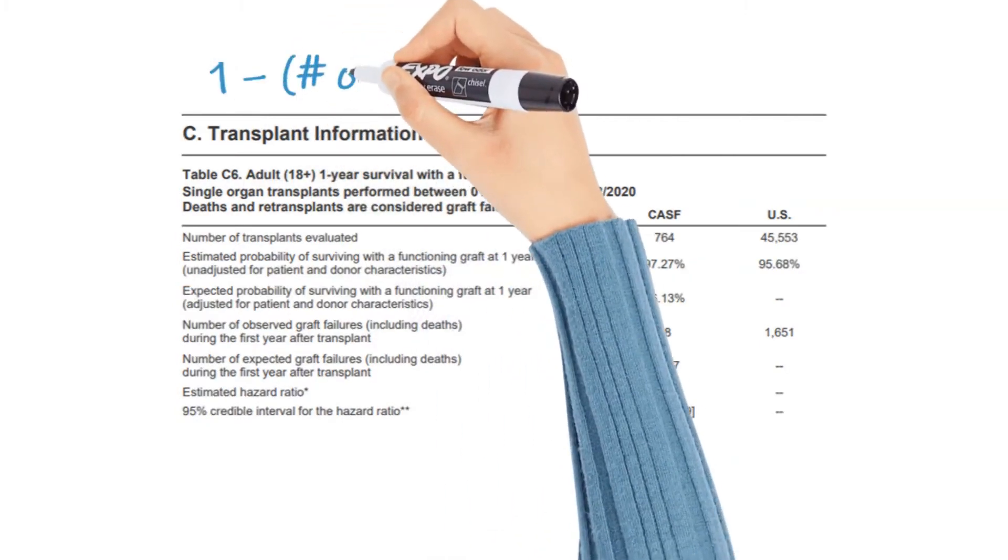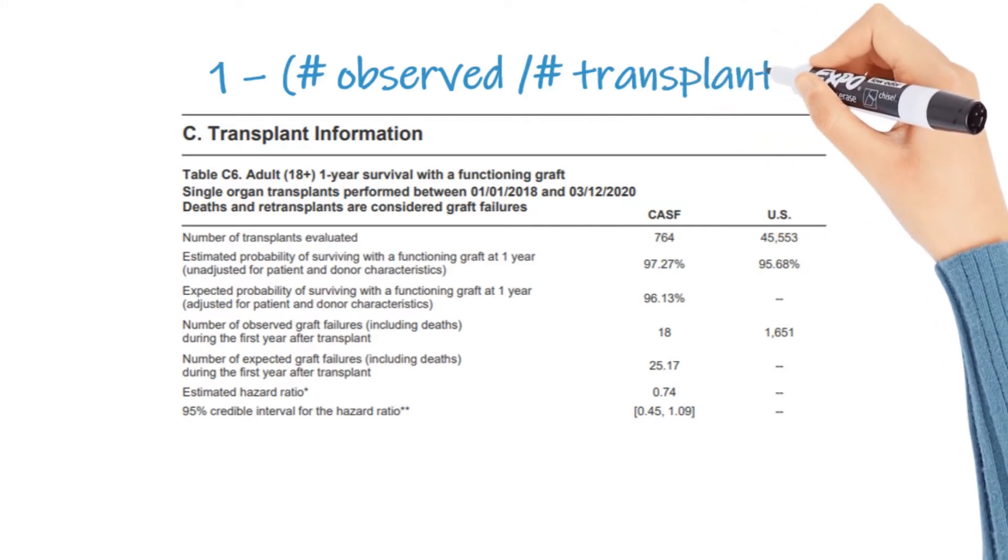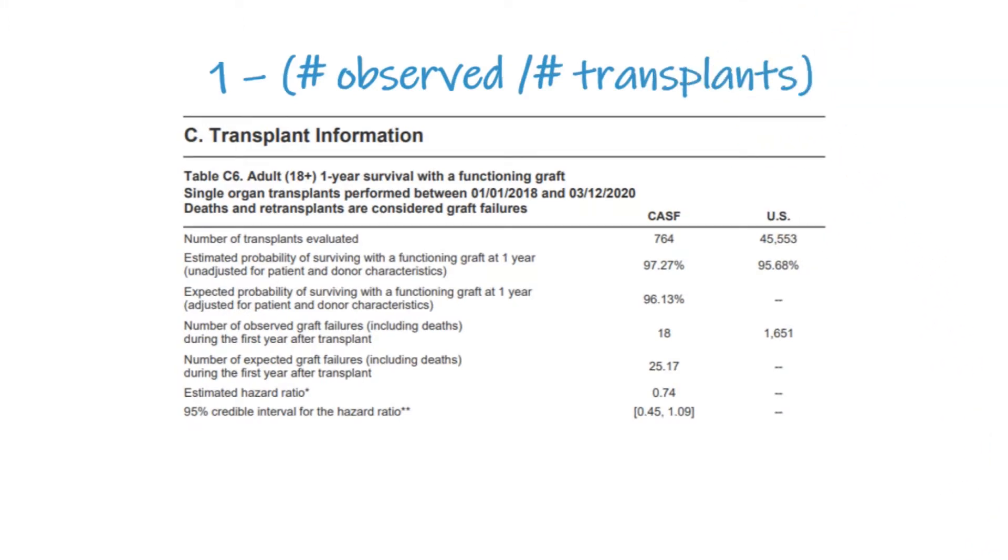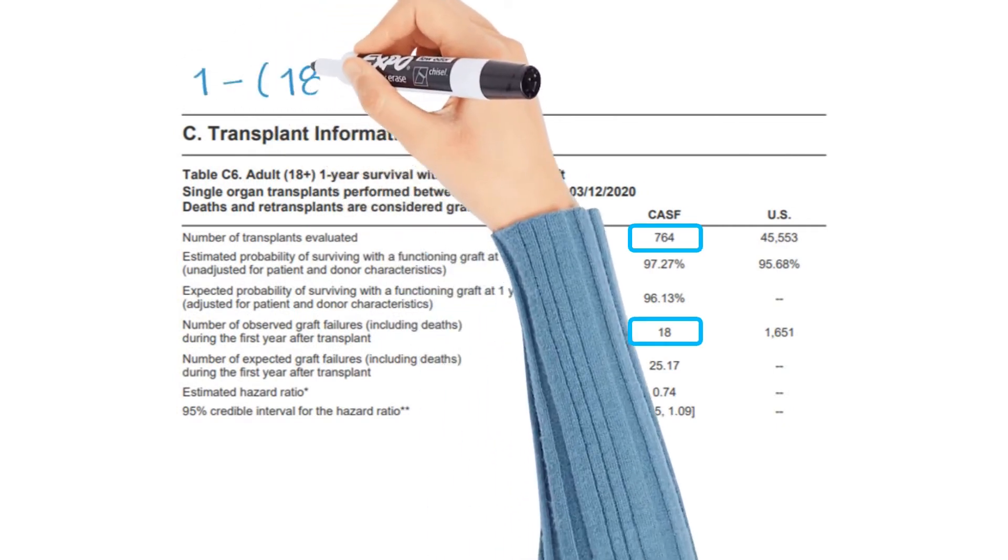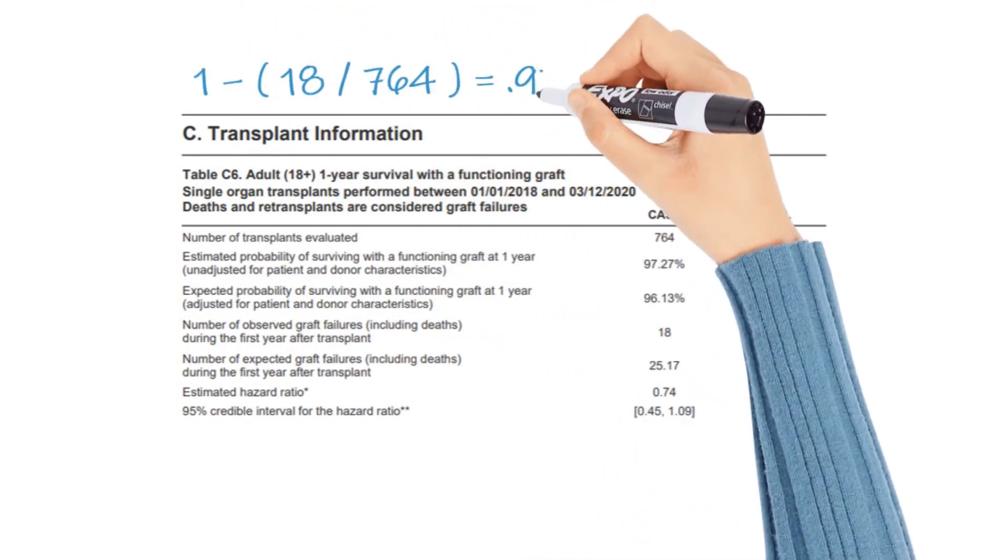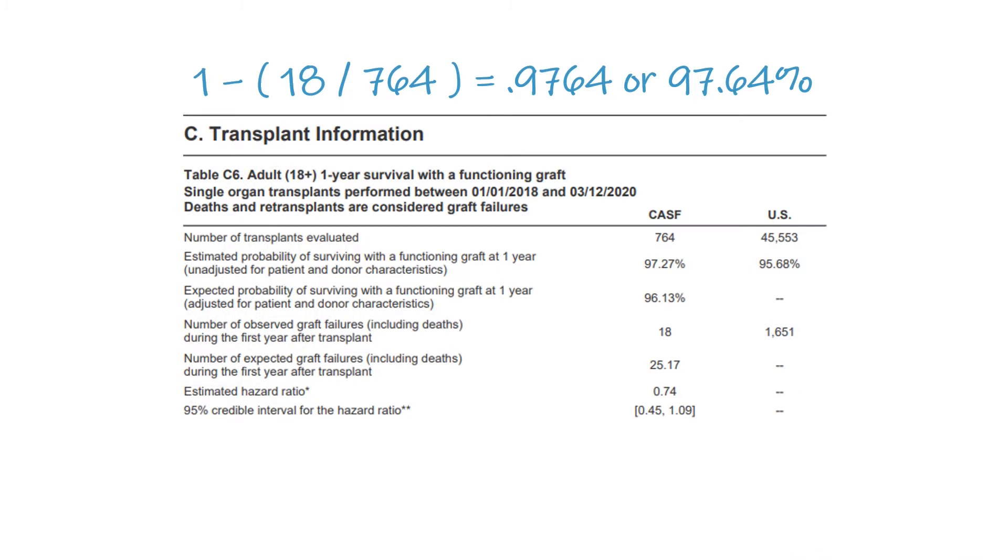But dividing the number of failures by the number of transplants typically produces an observed survival percentage. In some cases, the product of this division can be very close to the published estimated survival rate, which can be confusing, but that is not exactly how the estimated survival probability is derived.